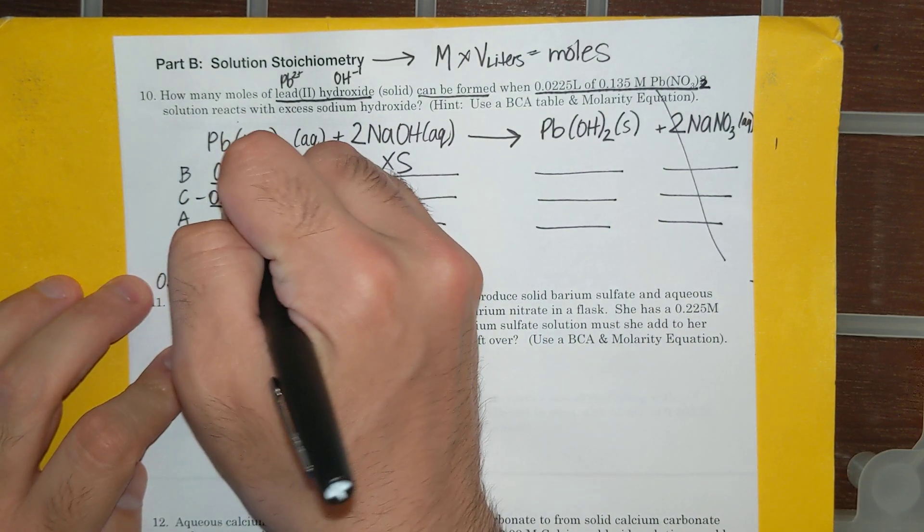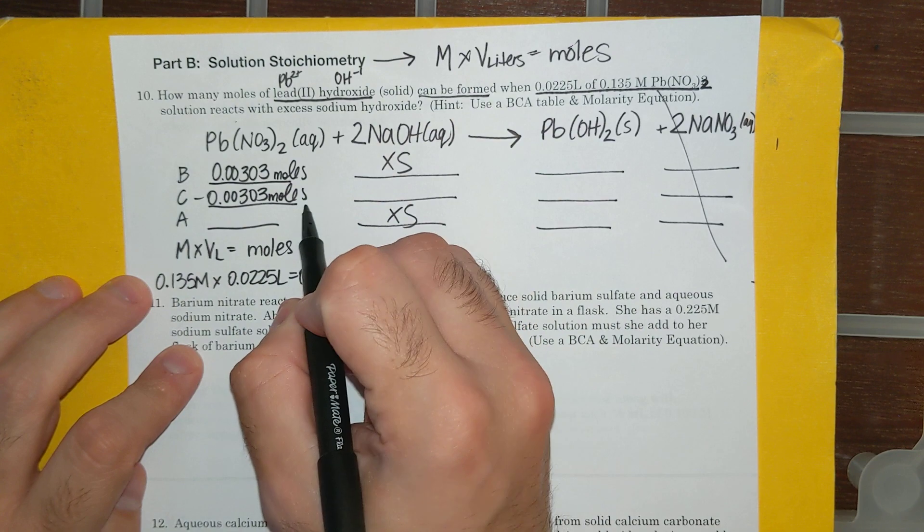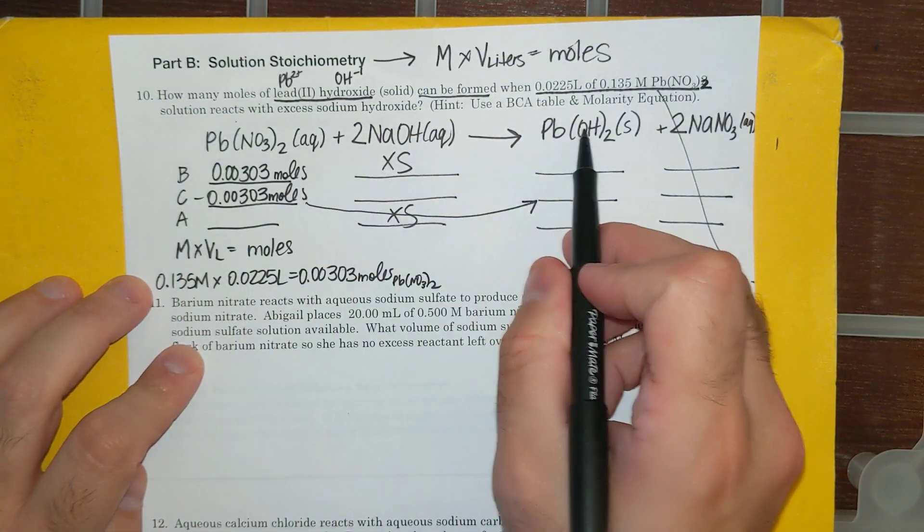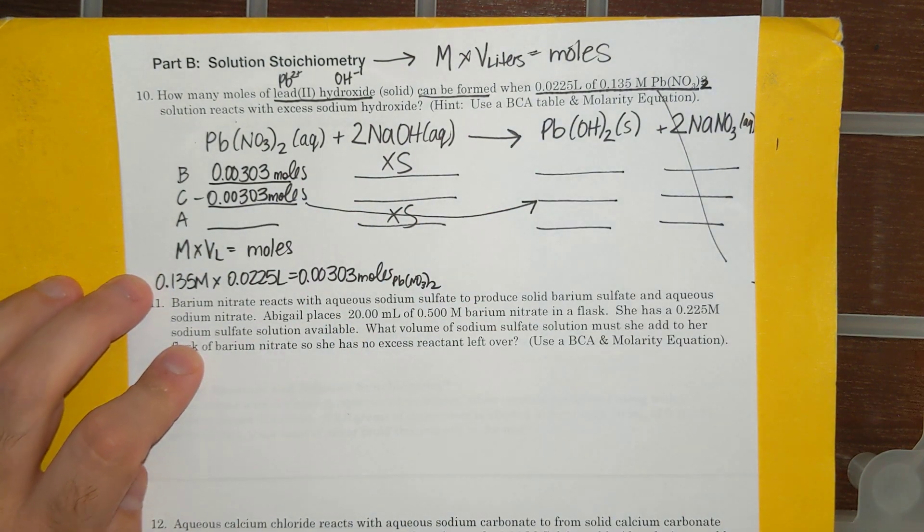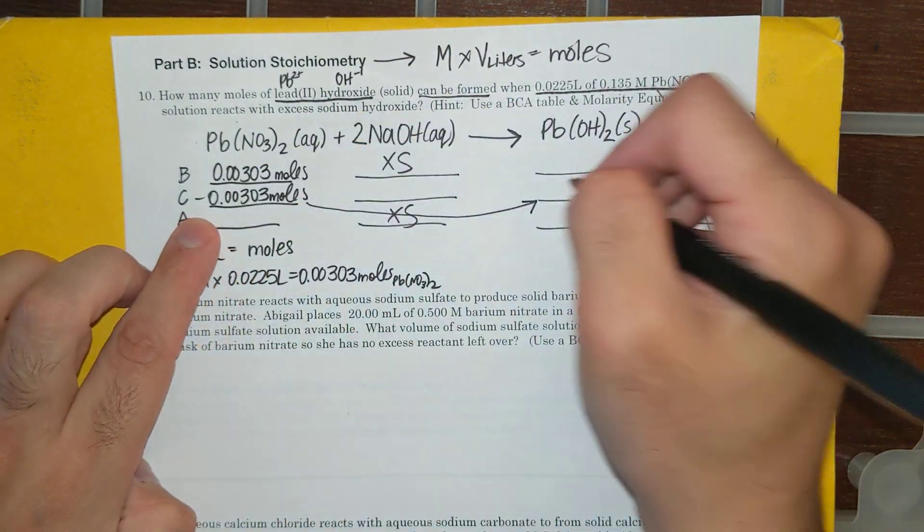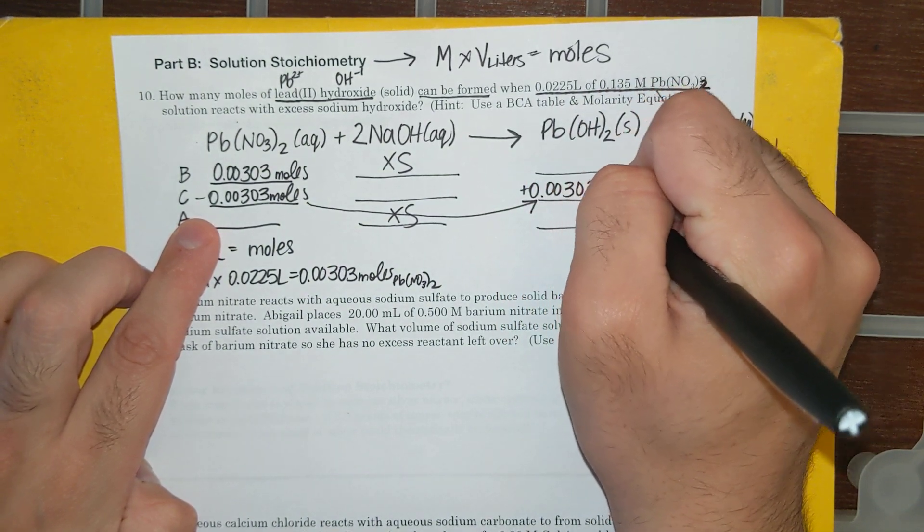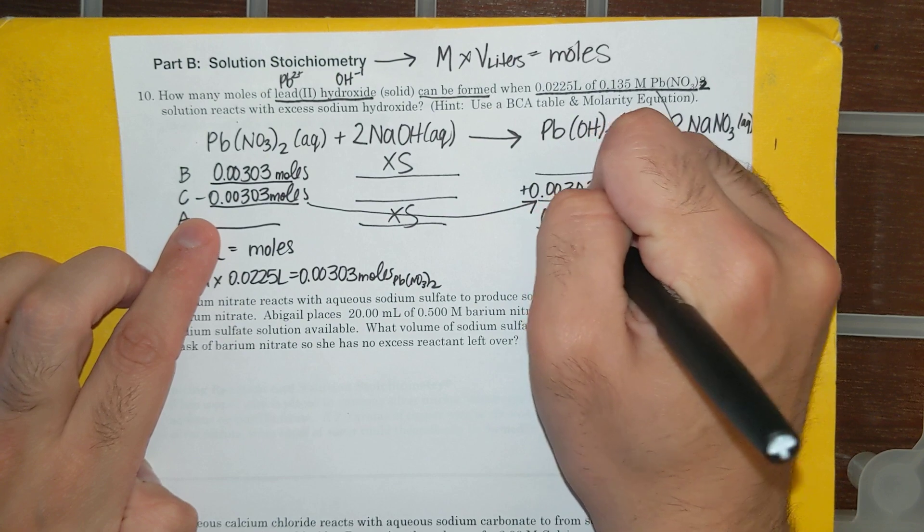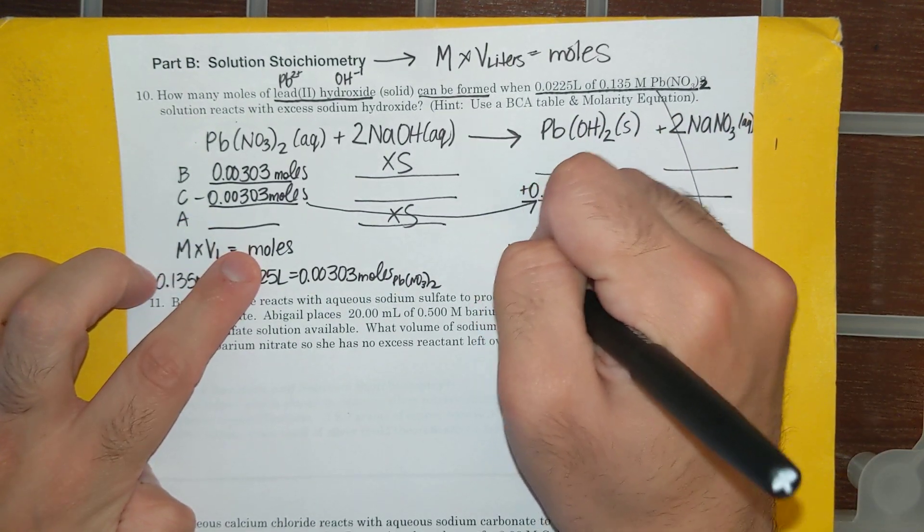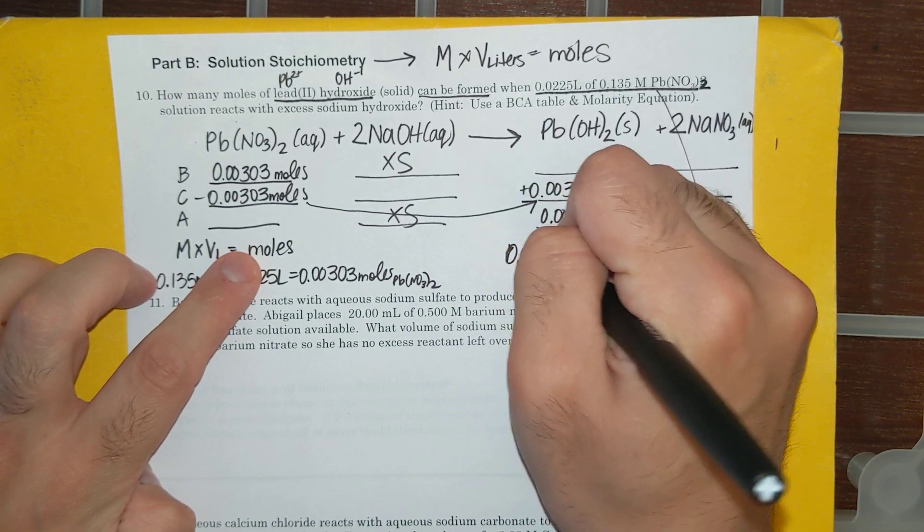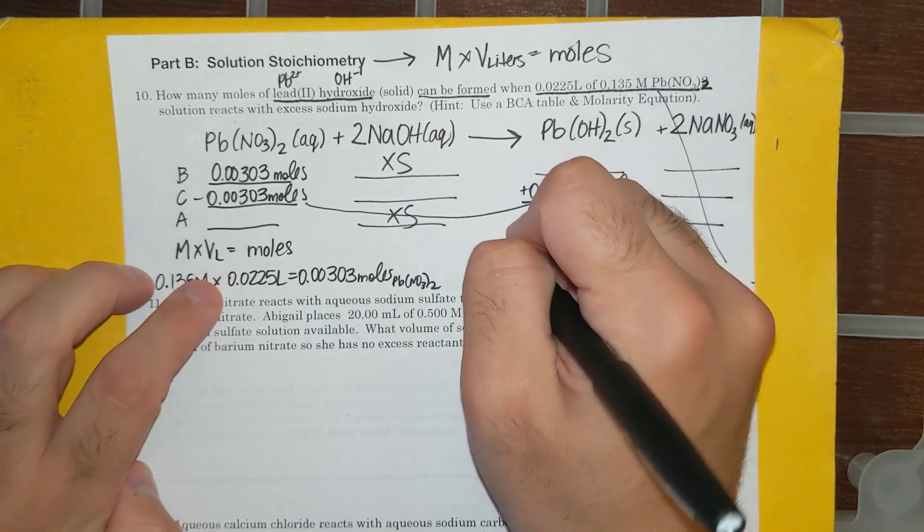Well, I'm going to use all of this, and change is where the magic happens. It looks like, according to the balanced chemical equation, this is a 1 to 1 mole ratio. So my moles of lead nitrate are going to be equal to my moles of lead hydroxide. So there is my answer. So I will get 0.00303 moles of lead hydroxide. Done.